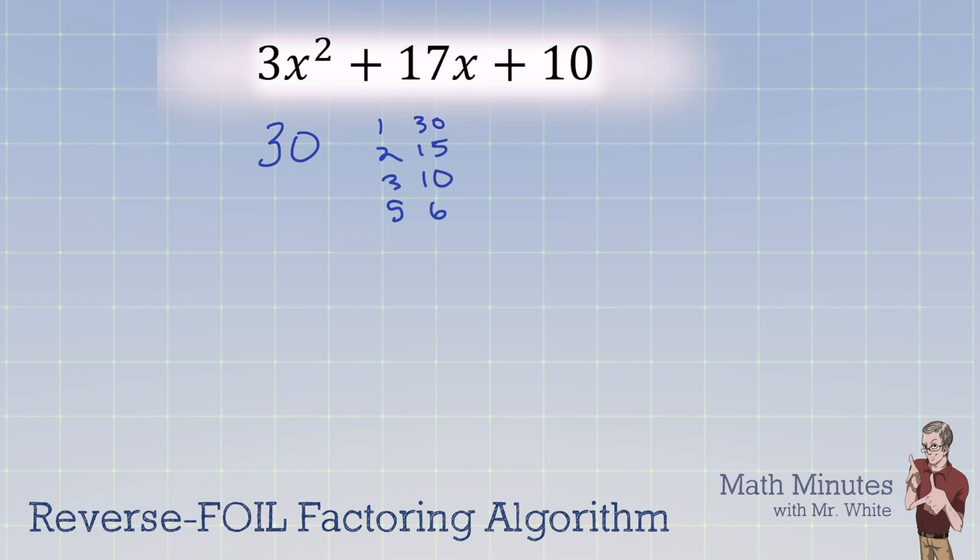Now look through that list, and I want you to tell me which one adds up to 17x, because 17x is the middle term. Which one is it? It is the 2 and the 15. So we're going to take that 17x and we're going to write it down below. But instead of writing 17x, we're going to split it into 2x plus 15x.